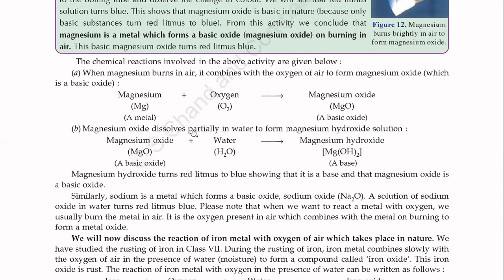Magnesium oxide dissolves partially in water to form magnesium hydroxide solution. The reaction is: MgO + H₂O → Mg(OH)₂. This is magnesium hydroxide. Magnesium hydroxide turns red litmus to blue, showing that it is a base and that magnesium oxide is a basic oxide.